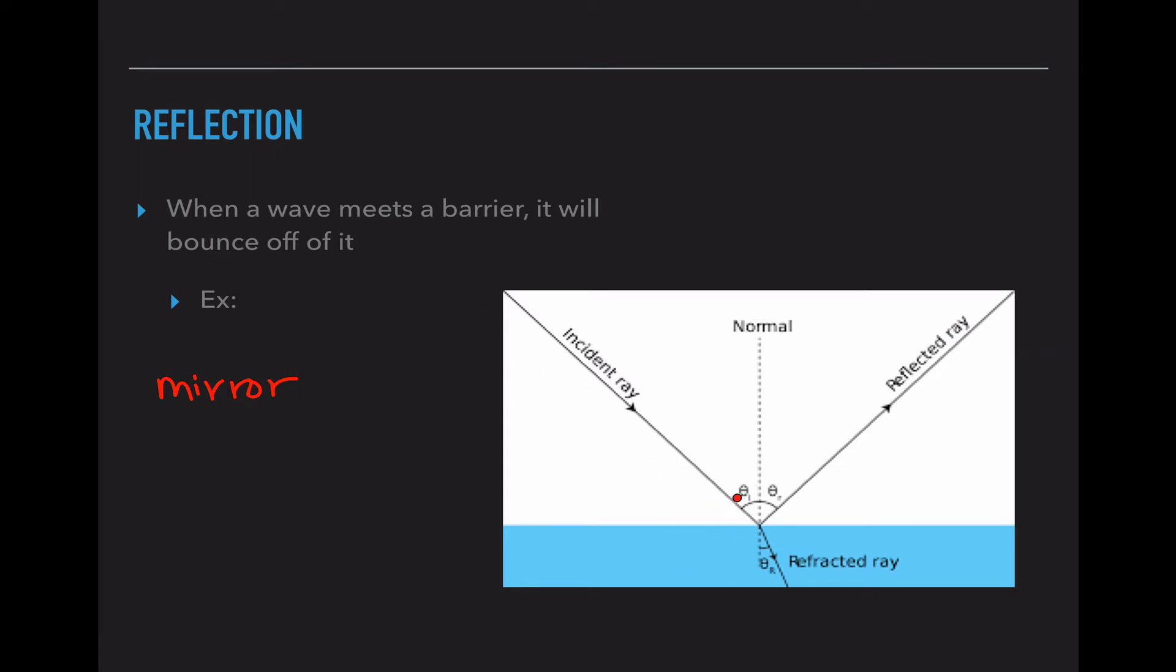These angles, this incident angle and this reflective angle, are always going to be the same number because mathematically they have to be equal. So if this is a 15 degree angle, this is also a 15 degree angle. So reflection is the first one - the wave bounces off.